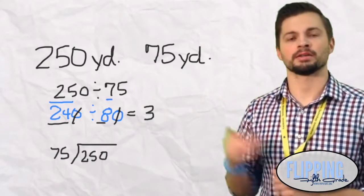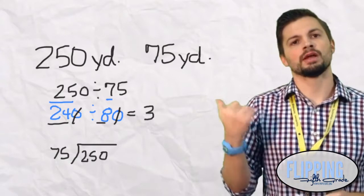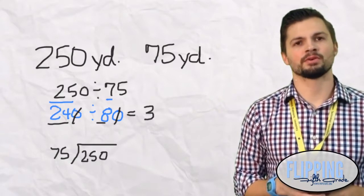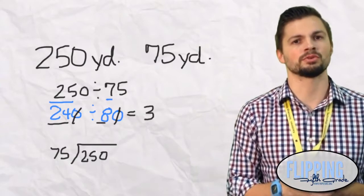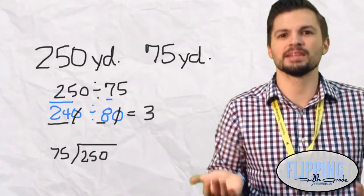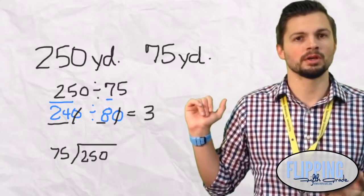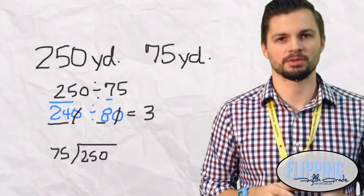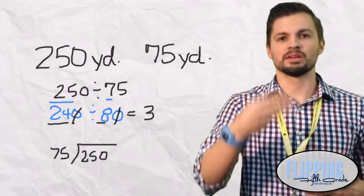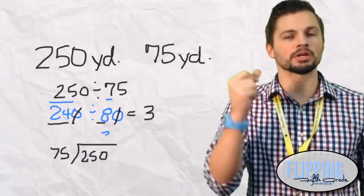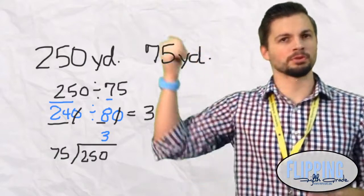250 divided by 75 set up in long division brackets. So now we look at this problem and we say, does 75 go into 2? No. Does 75 go into 25? No. Does 75 go into 250? Yes. But how many times? Well yes, we could count and we could do little multiplication problems or we could use compatible numbers like we just did. Now we know that it goes in about 3 times. So we are going to use that 3 as a starting point. We are going to put the 3 above the zero.